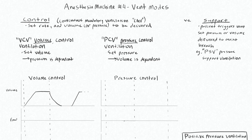Volume control is sometimes called VC-CMV because it's a continuous mandatory ventilation mode that is volume control. Pressure control is sometimes called PC-CMV. Just remember that these control modes differ from support, where the patient actually triggers the vent to assist them with delivering a set volume or pressure. Pressure support ventilation would be a patient-triggered breath that is then supported up to a certain amount of pressure. Let's look at some volume, flow, and pressure curves now.